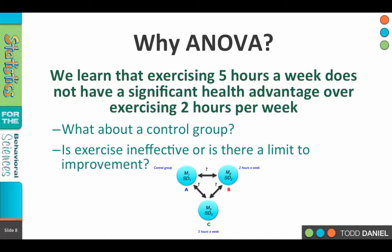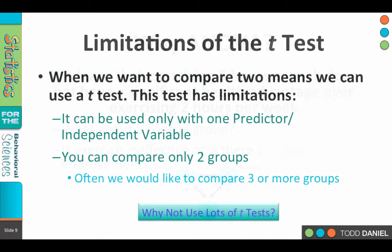So how could we test that? What we would need to do is add a control group. We could compare people who don't exercise at all, to people who exercise a little bit — say two hours a week — to people who exercise a lot — say five hours a week — and we want to know if there is a change in their health outcomes based on how much they exercise. We have three groups: we randomly assign people to the no exercise group, the small amount of exercise group, and the large amount of exercise group, and then we compare their overall health outcomes.